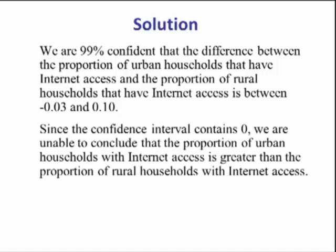Now really what that tells us is since the confidence interval contains zero, zero is a possible answer which suggests that the population proportions can be equal, and we are unable to conclude that the proportion of urban households with internet access is greater than the proportion of rural households with internet access.